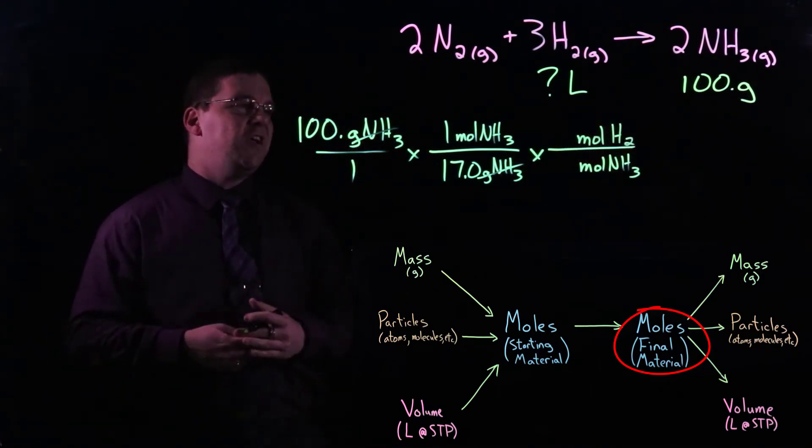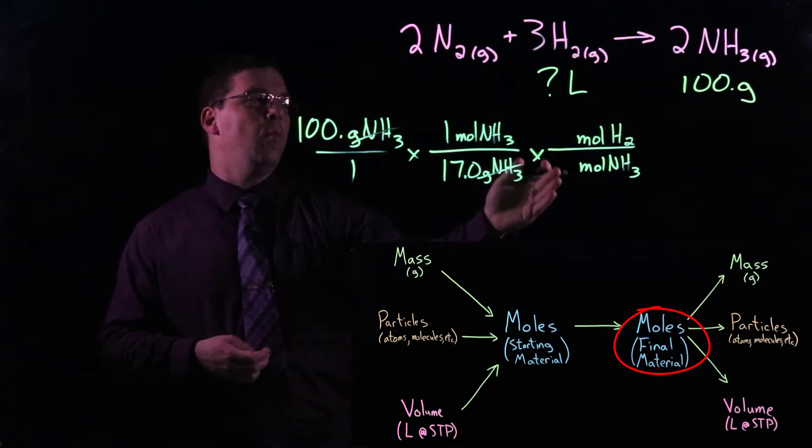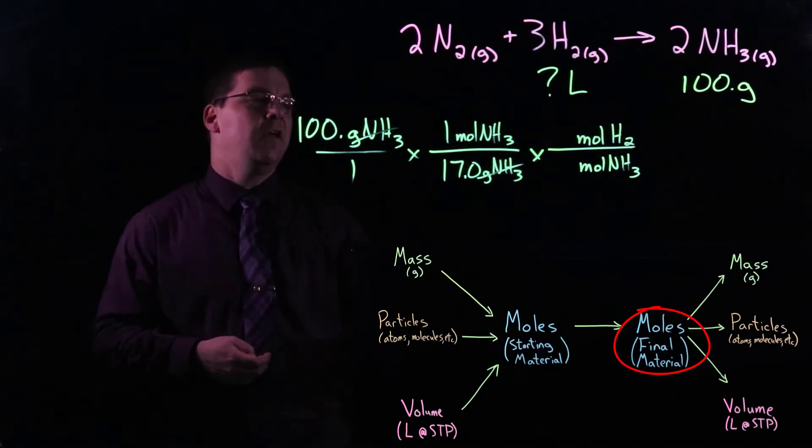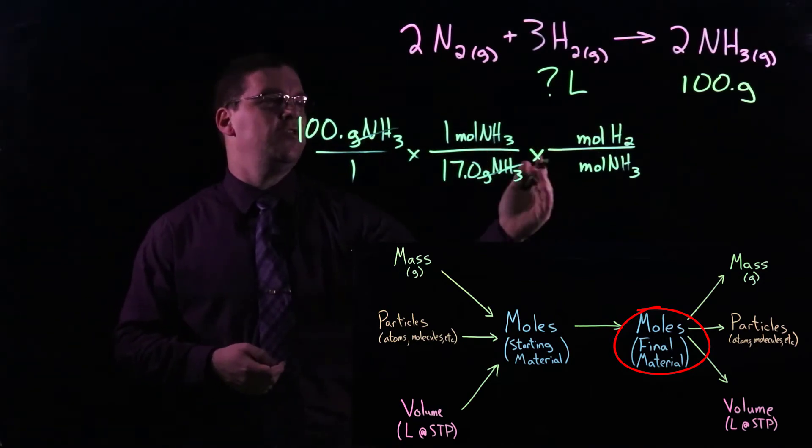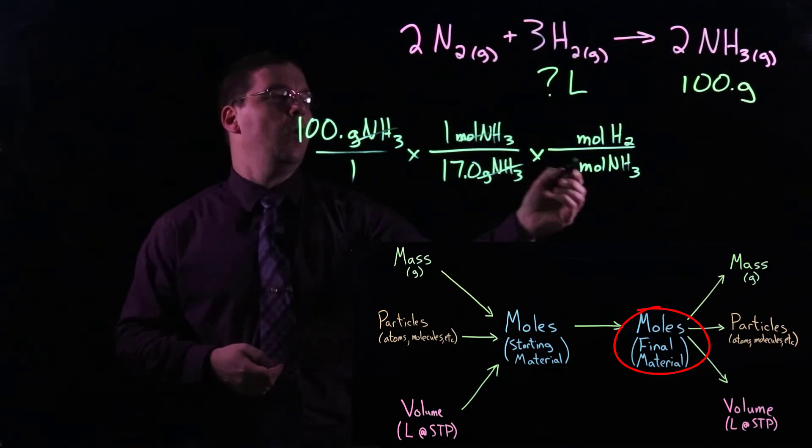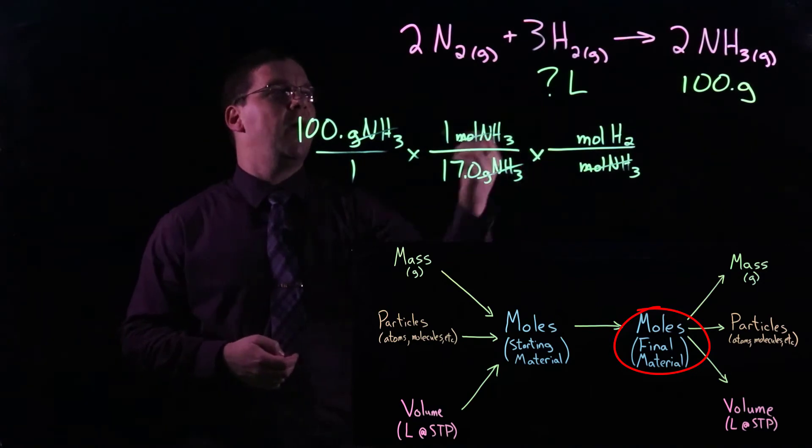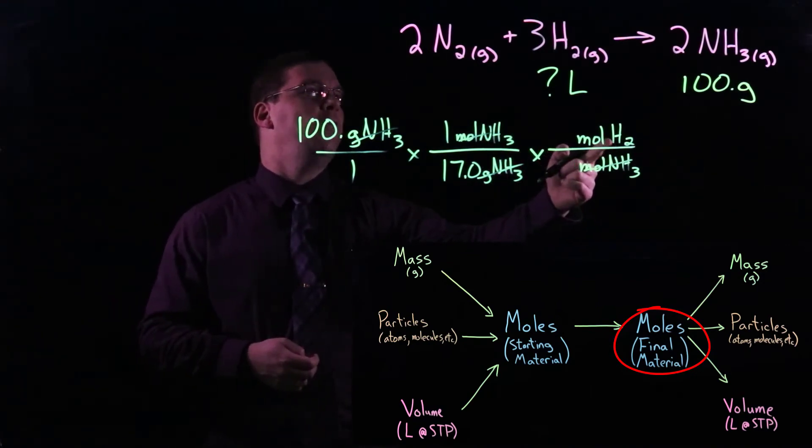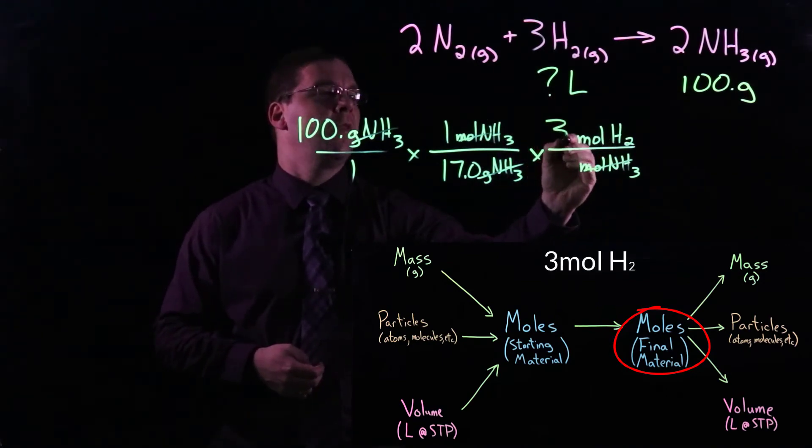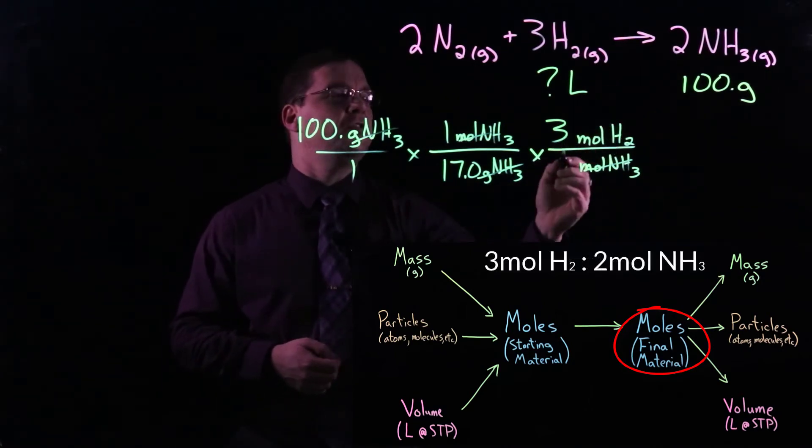So again, I would suggest start by writing in your mole units and the formulas. Don't worry about the numbers just yet. Get those units set up so that you can see where the mole units are going to factor out. But then go to your balanced equation and look at the coefficient for hydrogen, which is 3, and the coefficient for ammonia, which is 2.